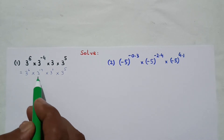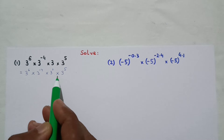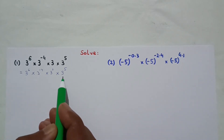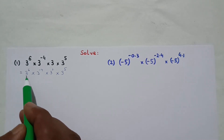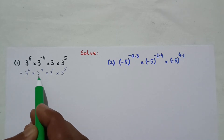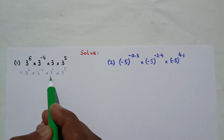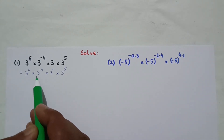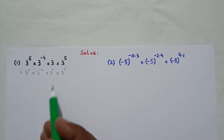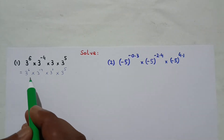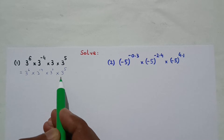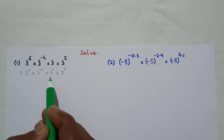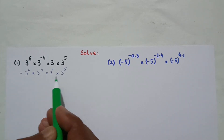So I am writing: 3 to the power 6, multiplied to 3 to the power minus 4, multiplied to 3 to the power 1, multiplied to 3 to the power 5. Here I have 4 power expressions which are getting multiplied to each other. The base of all the 4 power expressions is 3. So 3 is the base for all the 4 power expressions.